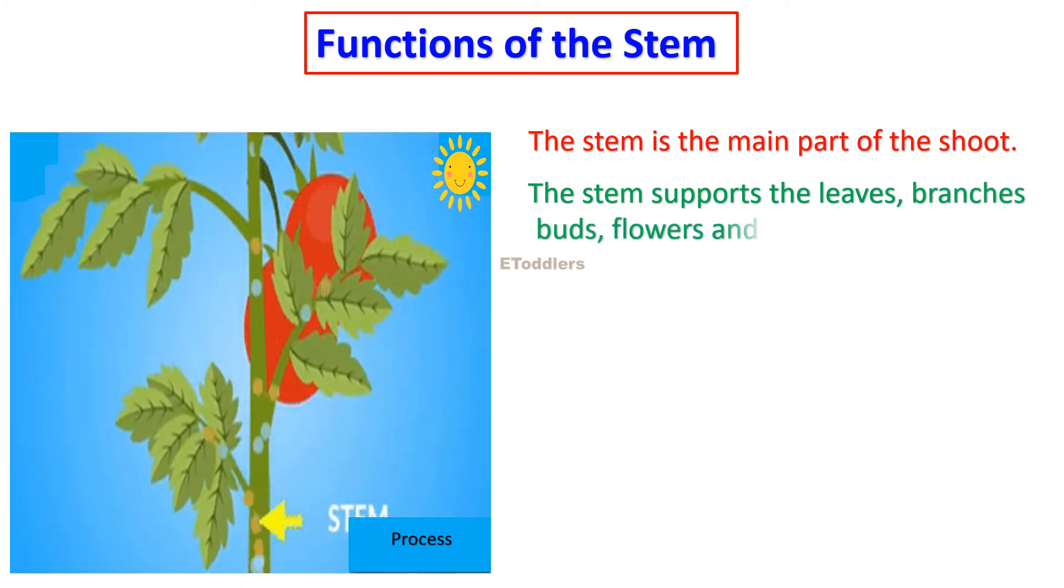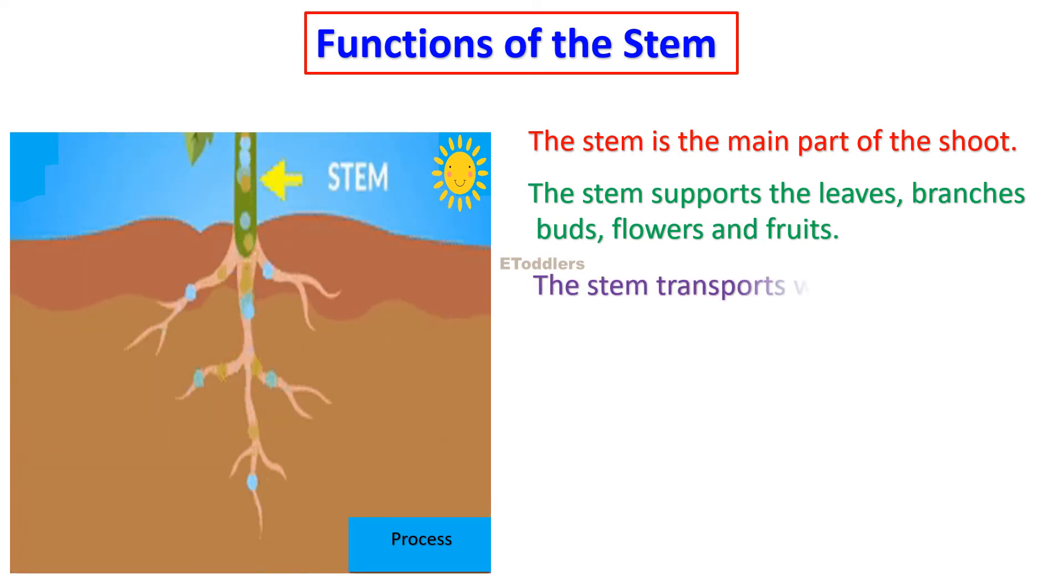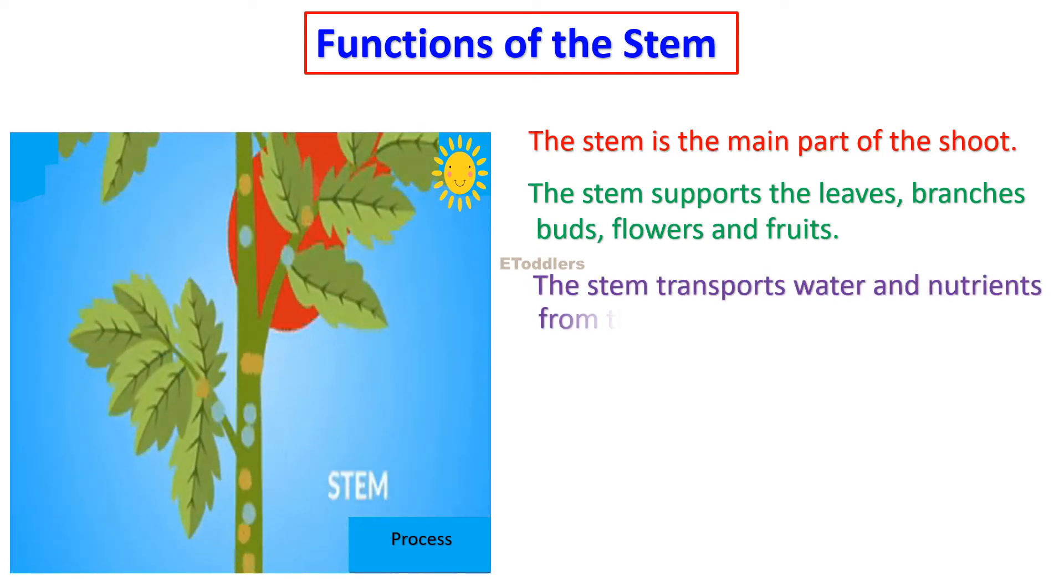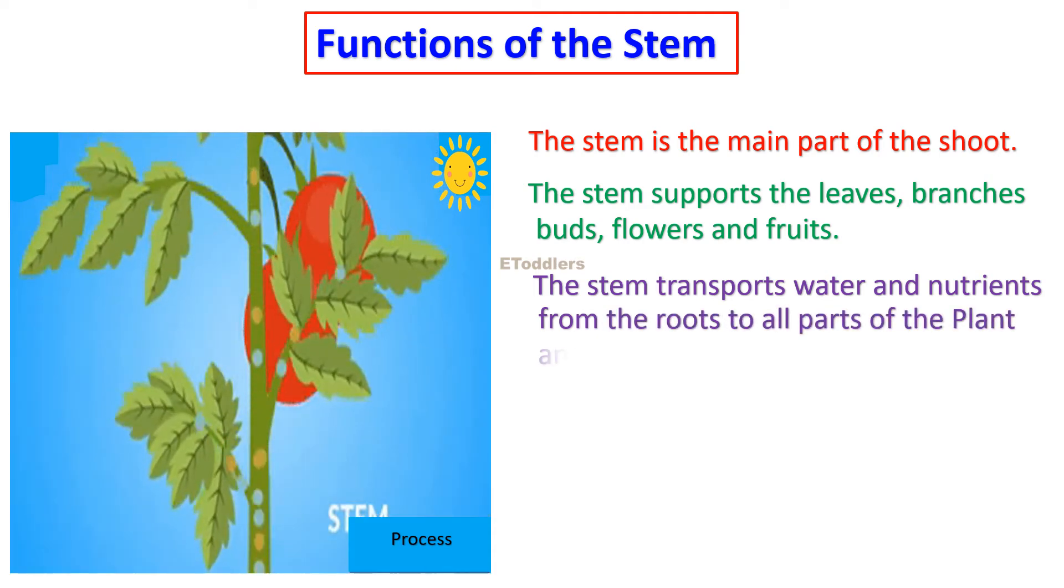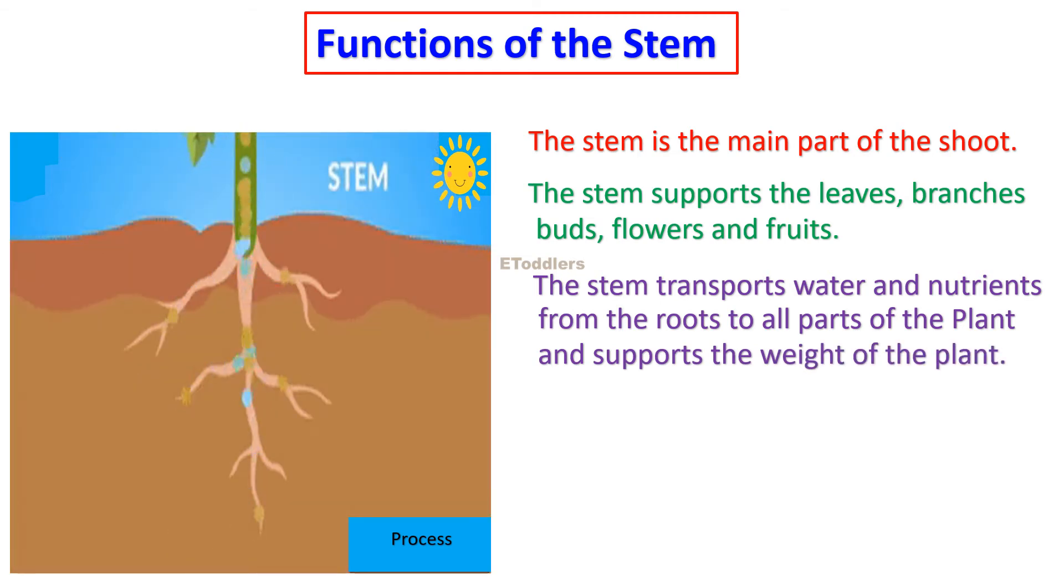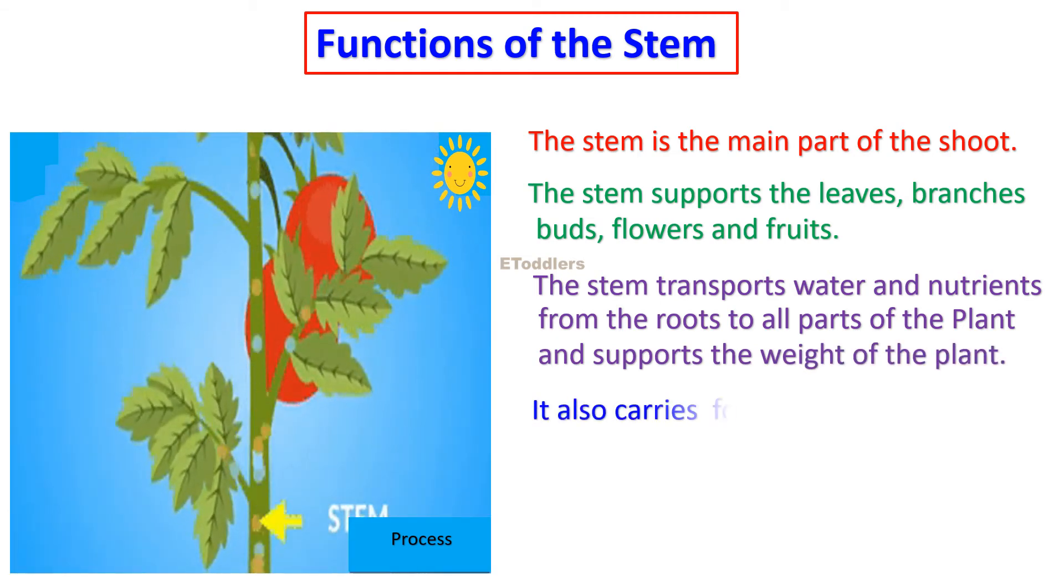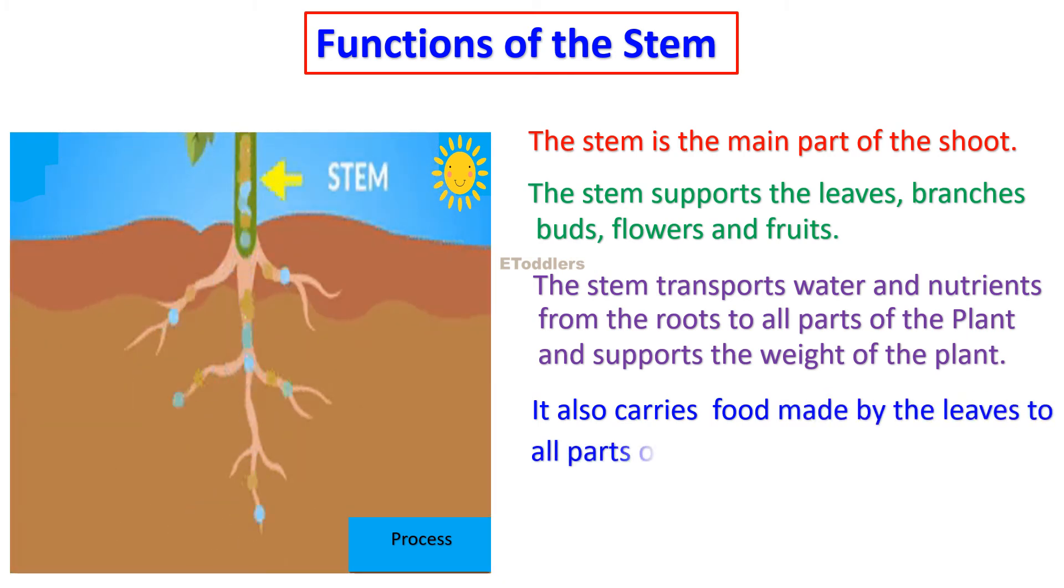The stem transports water and nutrients from the roots to all parts of the plant and supports the weight of the plant. It also carries food made by the leaves to all parts of the plant.